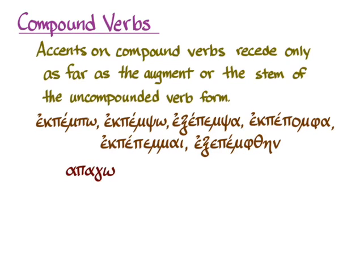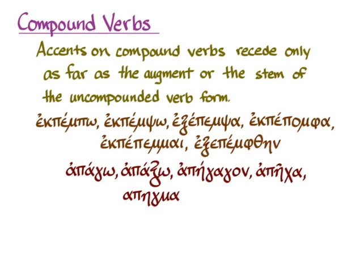But say we have a verb like 'apago,' meaning 'I lead away.' In the first three principal parts you're just fine: 'apago,' 'apaxo,' and 'apegagon.' The receding accent doesn't want to go onto the prefix. But when you get to the fourth principal part, 'ap-echa,' and the fifth principal part, 'ap-eagmai,' you have to give the accent the way shown here. It wants to recede back as far as it can go, and here we have three syllables. But because that third-to-last syllable happens to be a prefix, Attic Greek doesn't want that accent to be on the 'ap.'